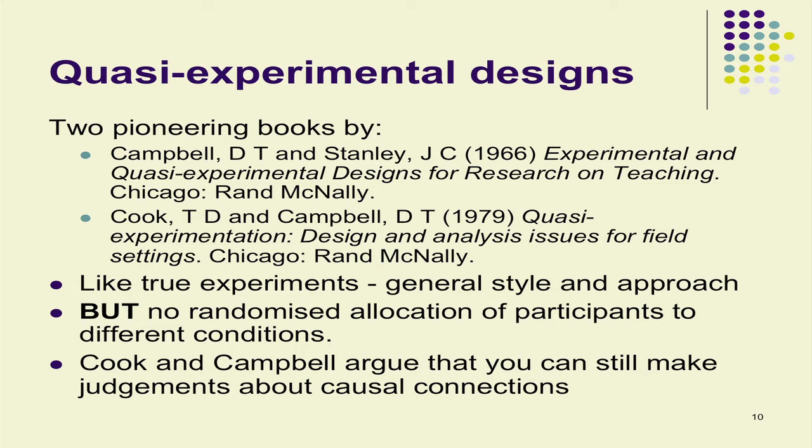Now, what is a quasi-experiment? As I said, it looks like an experiment but it really isn't. It has the general style and approach of experiments — you have groups, you have treatments, you have manipulations and measurements of things, or recording of things. All of that is just like a true experiment. But the one thing that's missing is there's no randomised allocation of participants. When you have two or more groups, you don't randomly allocate to those groups.